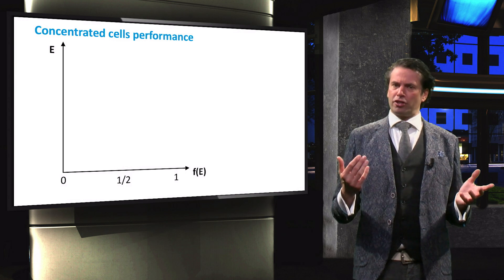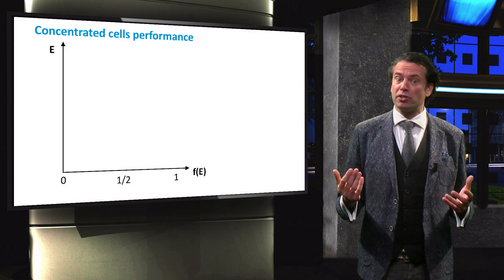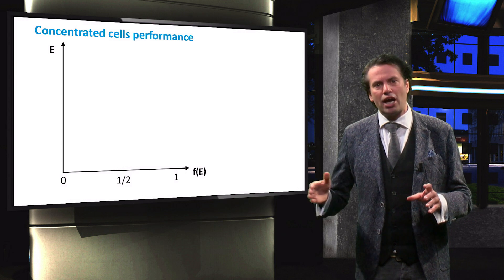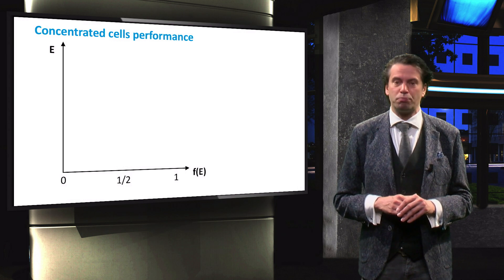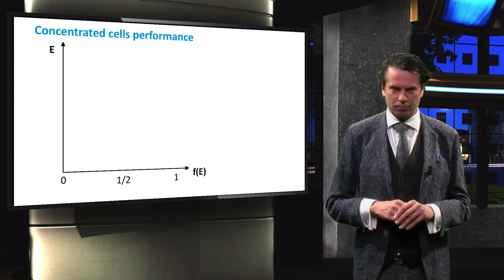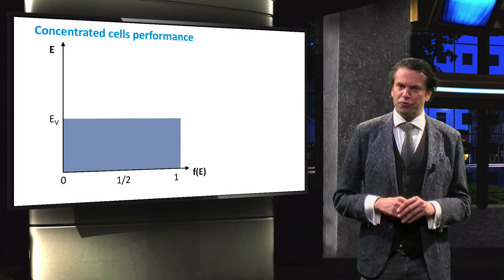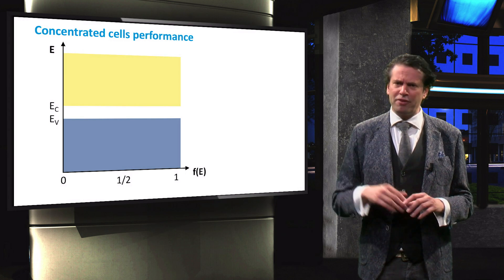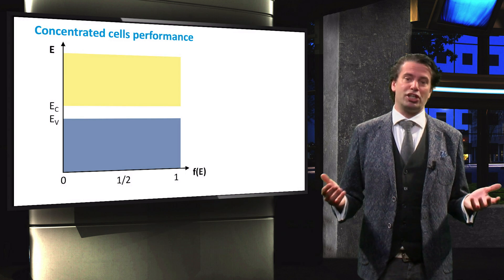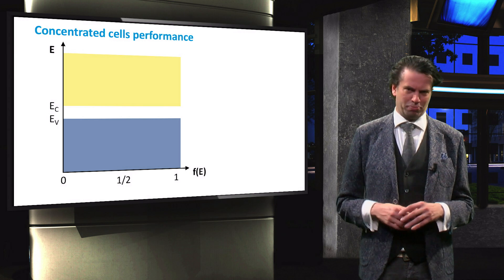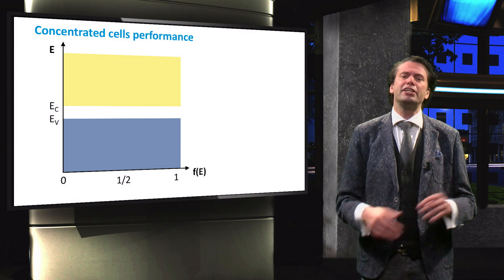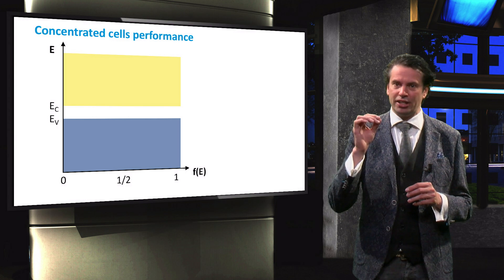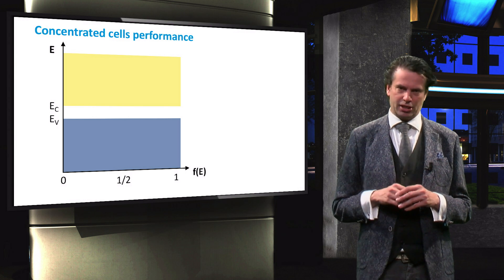In this graph, the vertical axis represents the energy level of the electrons, while the horizontal axis represents the occupation probability. This blue band represents the energy levels in the valence band and the yellow band represents the energy levels in the conduction band. For simplicity, we will look at the electron occupation in an intrinsic semiconductor.